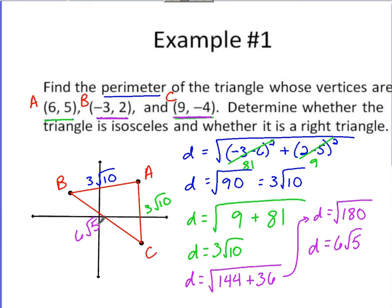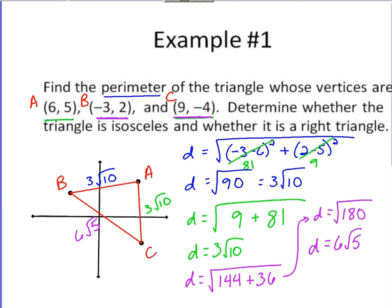So we apply the distance formula to find the length of all the sides of the triangle. First thing we're asked to find here in this question is perimeter. So perimeter we know we're just adding up all the sides. My perimeter is going to equal, got a couple of like radicals here we can add together. You got the 3 root 10, the 3 root 10, that's 6 root 10. And then you got that other 6 root 5. So perimeter is 6 root 10 plus 6 root 5.